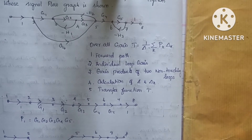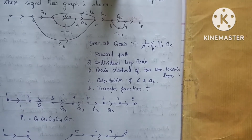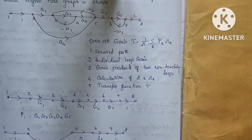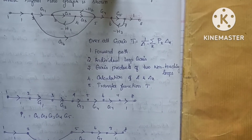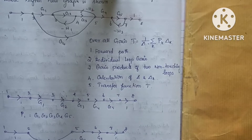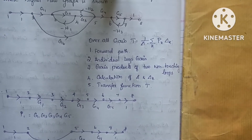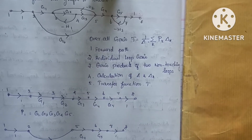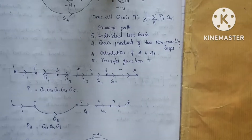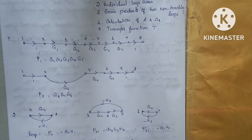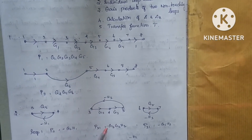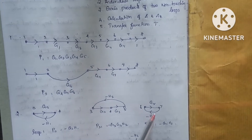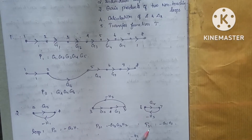The first loop route involves nodes 3, 4, and 5. We have minus G2, G3, H2 for loop L1. Then G5, minus H3 for another loop. That gives us loops at nodes 6 and 7.